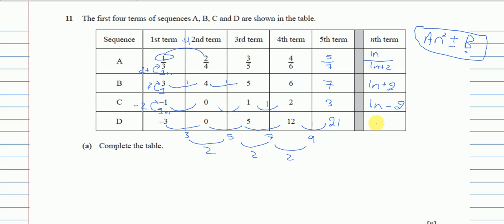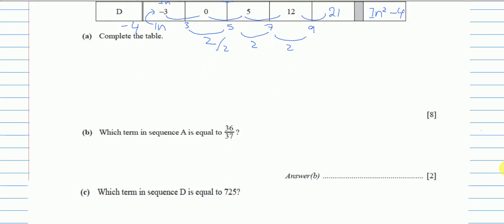When the second difference is constant, this means it's an n squared term. To find the coefficient a, divide the second difference by 2: 2 ÷ 2 = 1, so it's 1·n². To find the constant b, substitute n=1 into 1·n²: we get 1. To reach the first term -3 from 1, we subtract 4. So the formula is n² - 4.